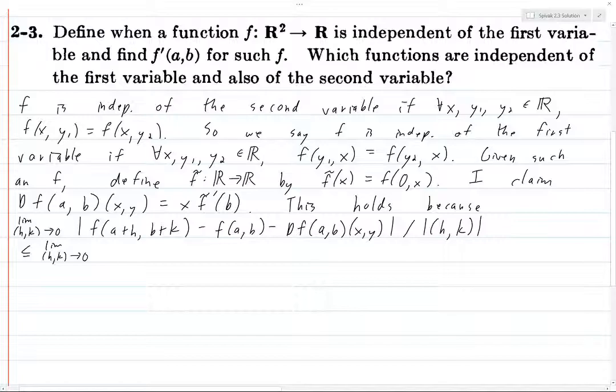f of A plus H, B plus k, well that's going to equal f of, well f of A plus H comma B plus k, first variable doesn't matter, so it's equal to f of 0 comma B plus k, which is precisely f tilde of B plus k.